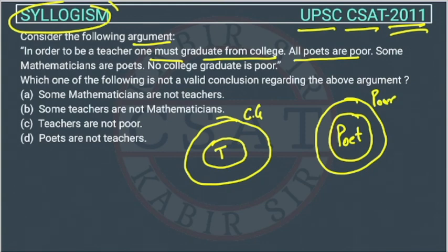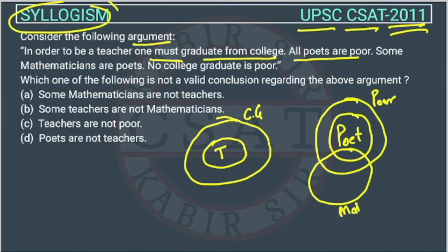Third premise: some mathematicians are poets. The mathematician Venn diagram will go inside the poet one. This is the Venn diagram of mathematician. The dotted area is representing that some mathematicians are poets.